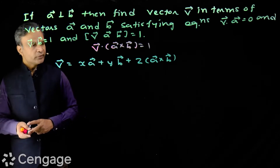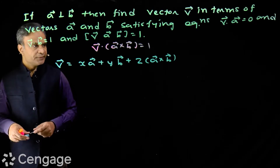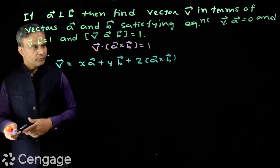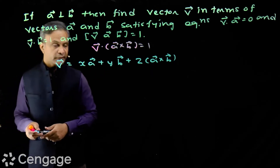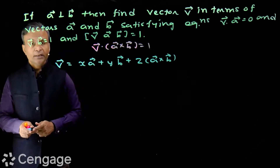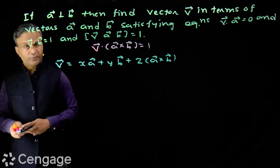Now, we have to get the values of x, y, and z. We want to write vector v in the form of a, b, and (a cross b). So we need to find the values of x, y, and z. Those values must be expressed in the form of vectors a and b.